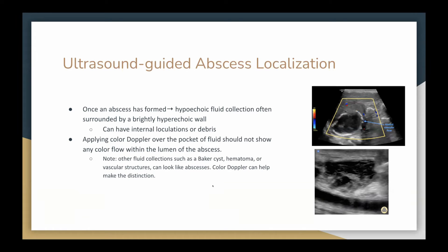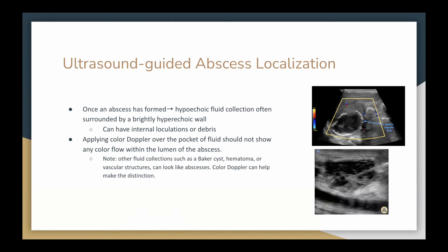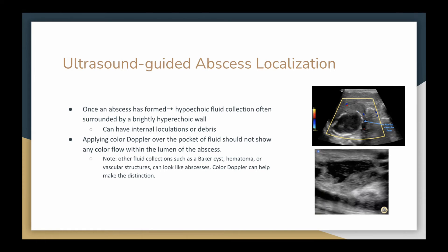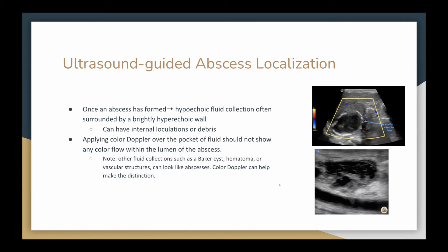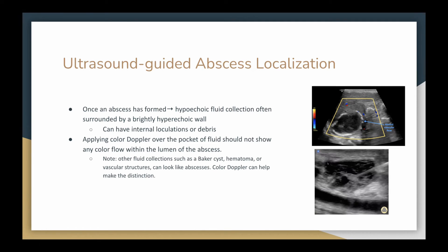Once an abscess is formed, it looks like a hypoechoic fluid collection that can be surrounded by a brightly hyperechoic wall, though that's not always the case. Abscesses can also have internal loculations or debris. If you think there is an abscess, you should apply color Doppler to double-check, because other fluid collections like baker's cysts, hematomas, or vascular structures can look similar. With those, you'd see vascular flow centrally, but with abscesses there should be absent vascular flow with flow only on the outside.